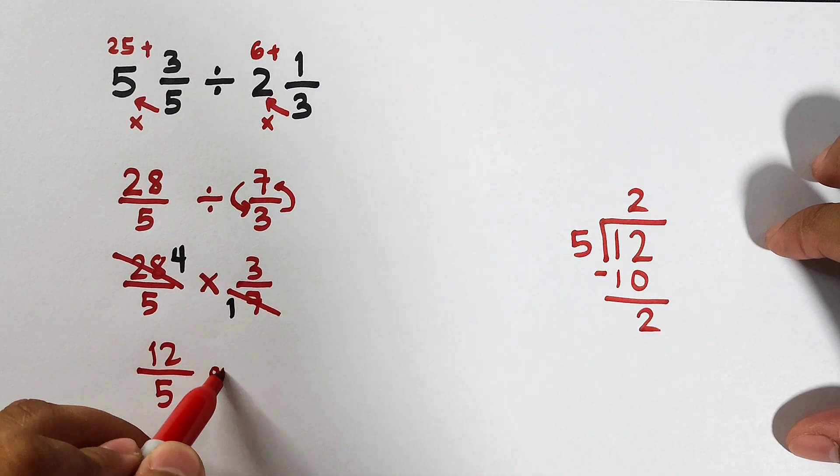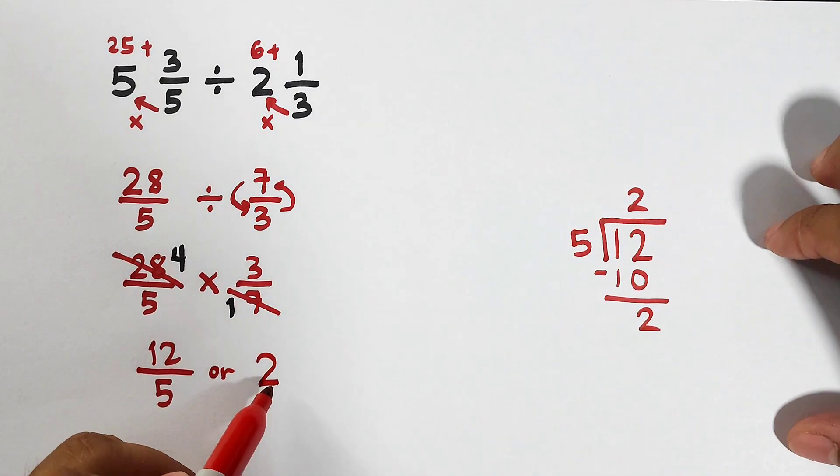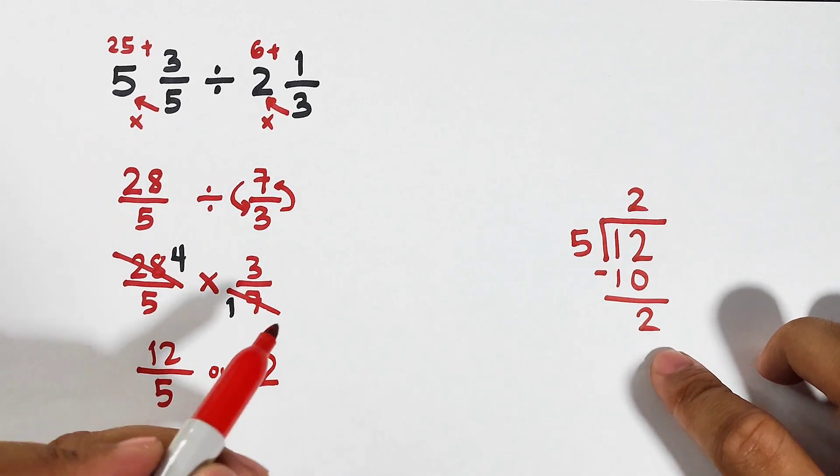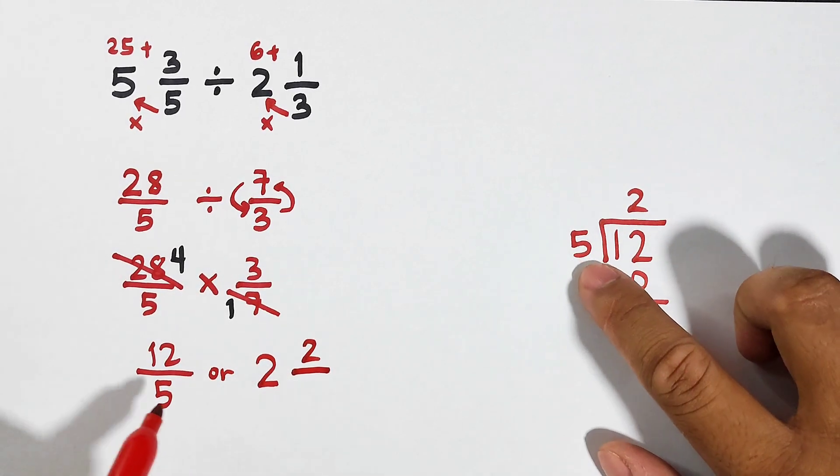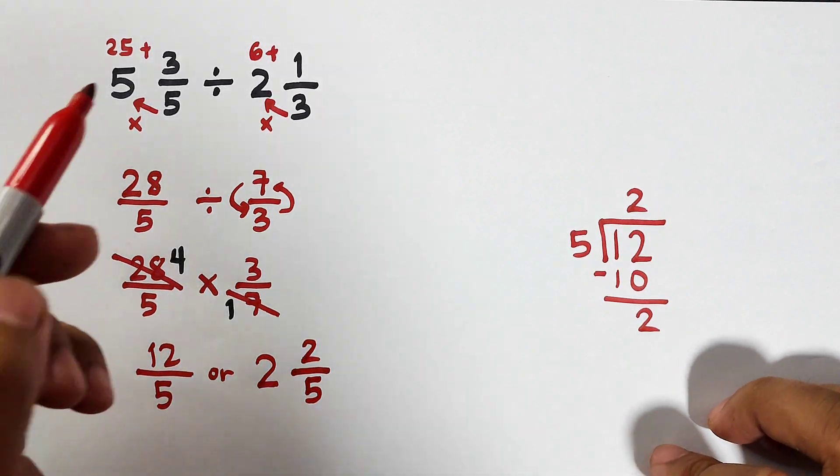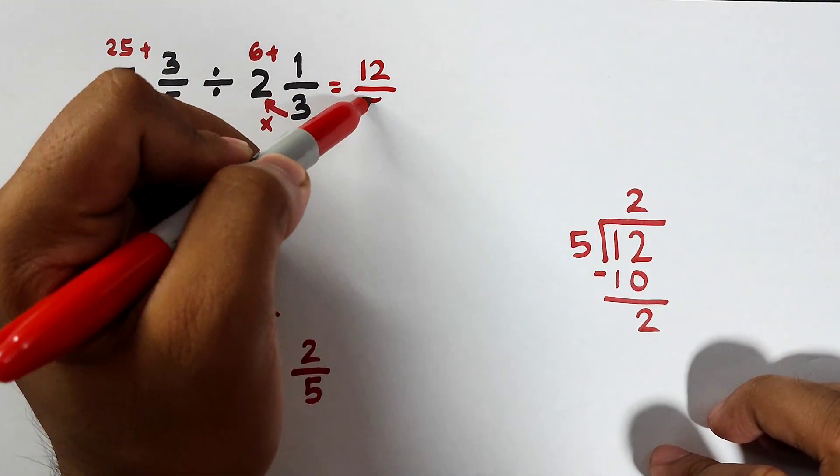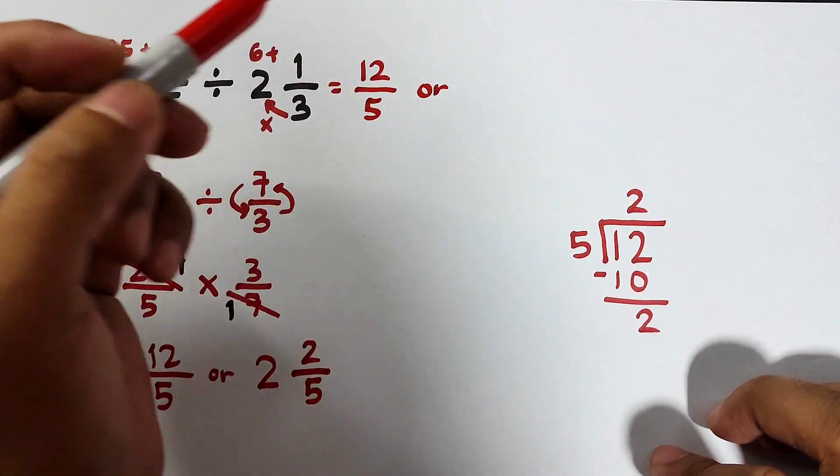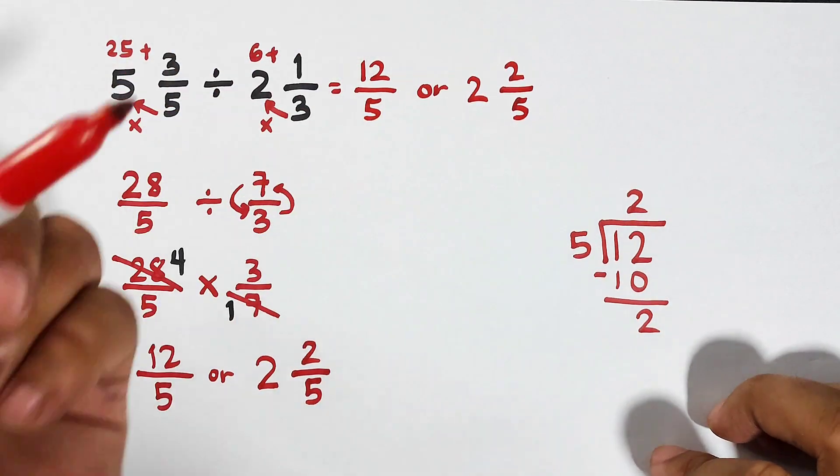The answer here: get the quotient, which is 2. Your remainder will serve as the new numerator, and copy the original denominator, which is 5. Meaning the answer here is simply 12 over 5, or 2 and 2 over 5. That's it, guys.